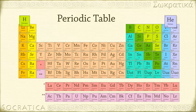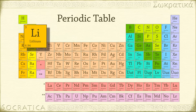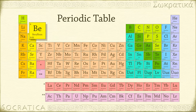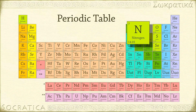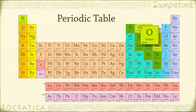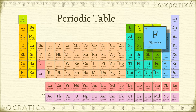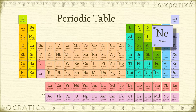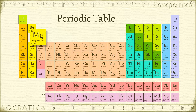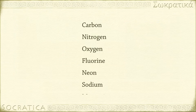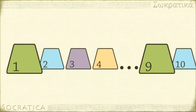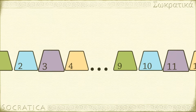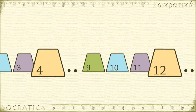The atoms are listed in order of increasing atomic number as you read the periodic table from left to right, top to bottom. Each element has a unique atomic number — that's the number of protons in the nucleus of the atom. If you arrange elements by atomic number, a pattern emerges.